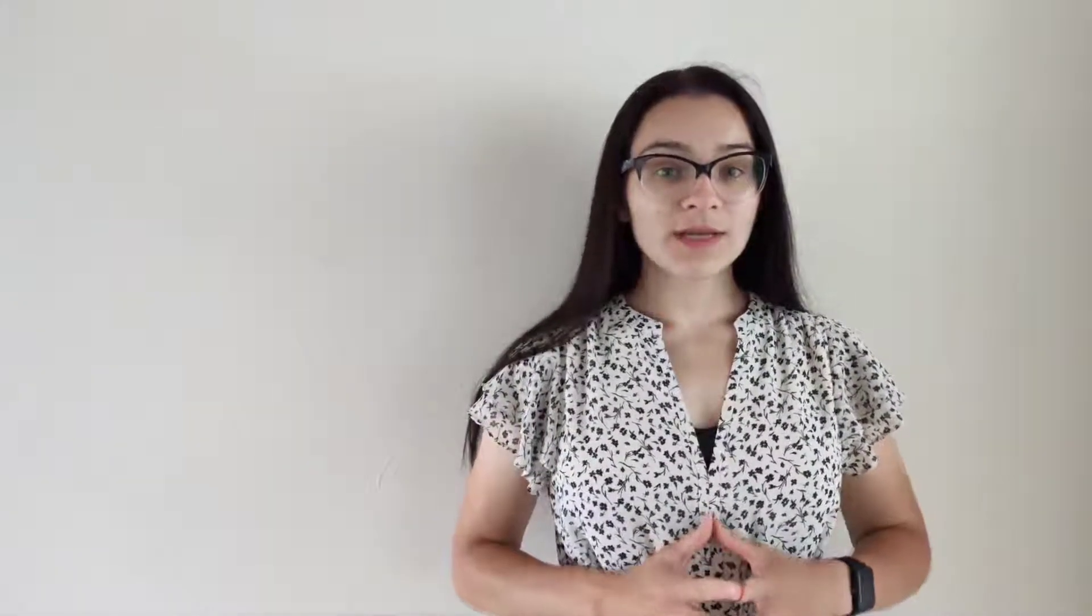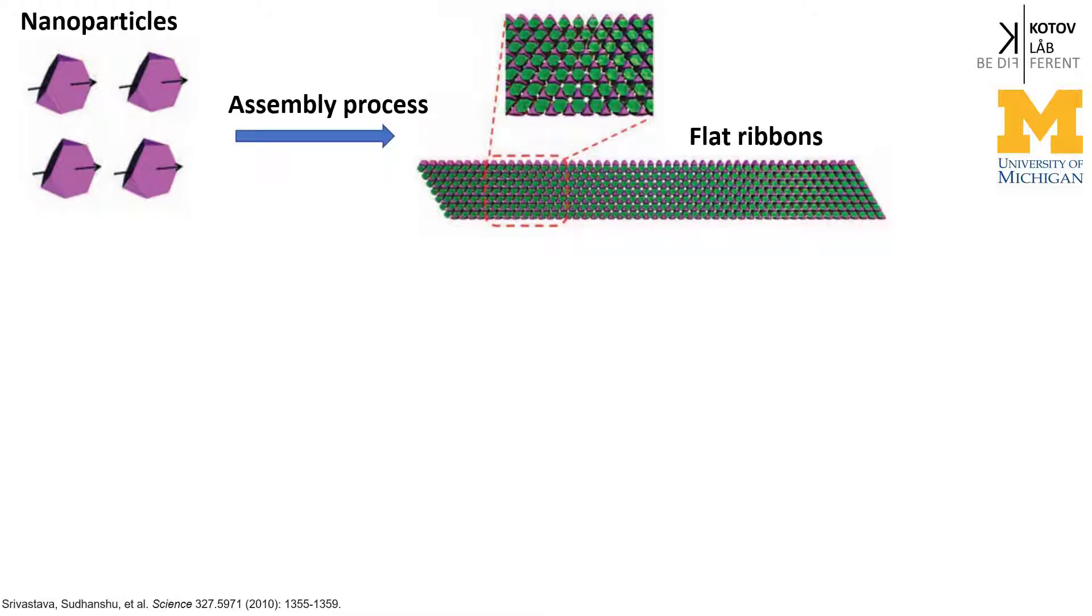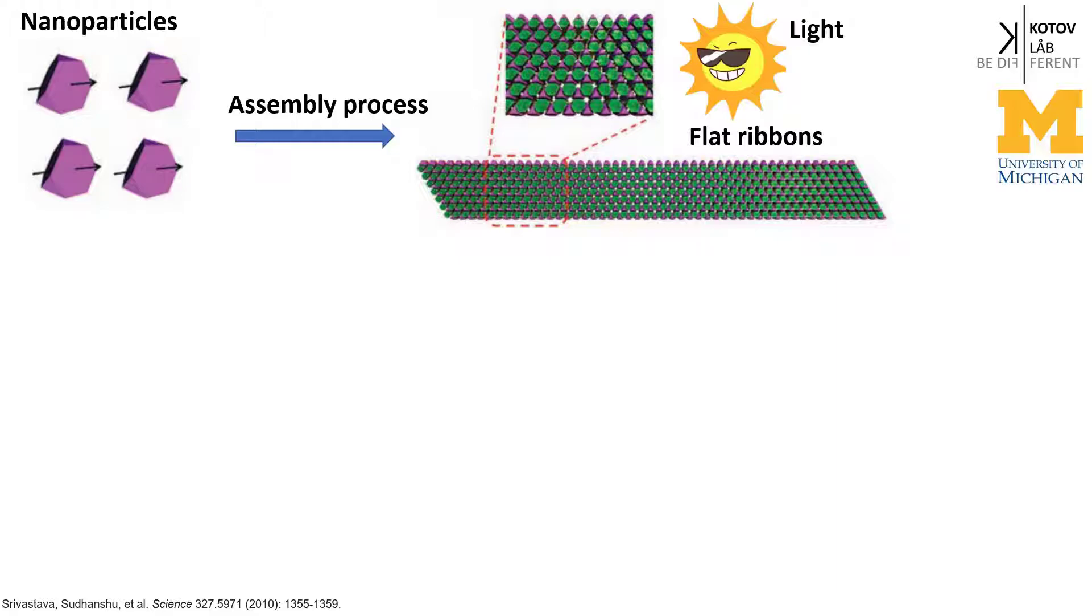Consider the following example. Individual nanoparticles assembled in flat ribbons. Illumination of the ribbons with light resulted in a twisting of ribbons, and the formation of left and right ribbons was with equal probability.